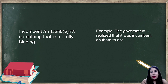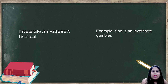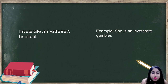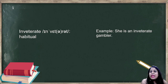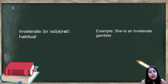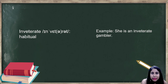The next word is 'inveterate.' Inveterate means habitual — something that is in you in a very habitual way, an aadat wali cheez. Example: she is an inveterate gambler. This is an adjective — 'inveterate' describes 'gambler,' telling us more about that person.